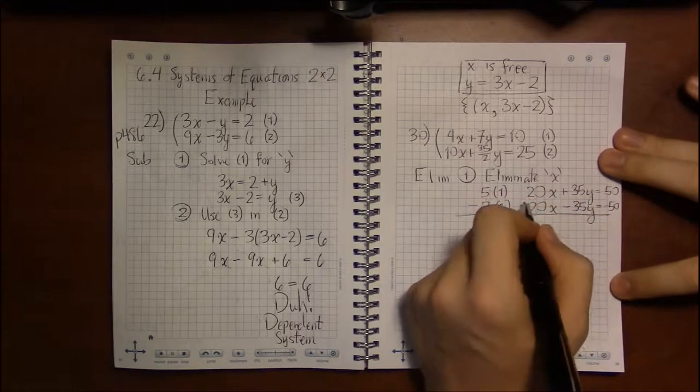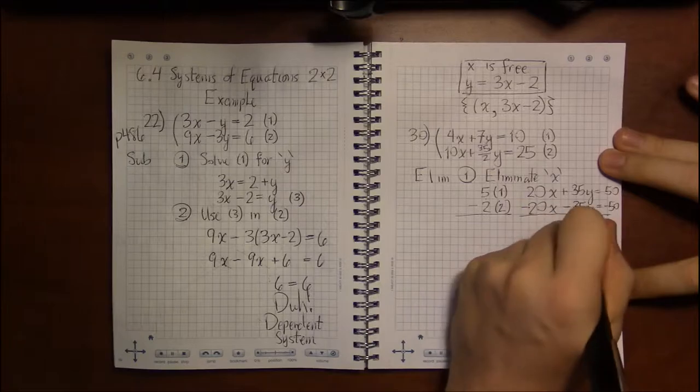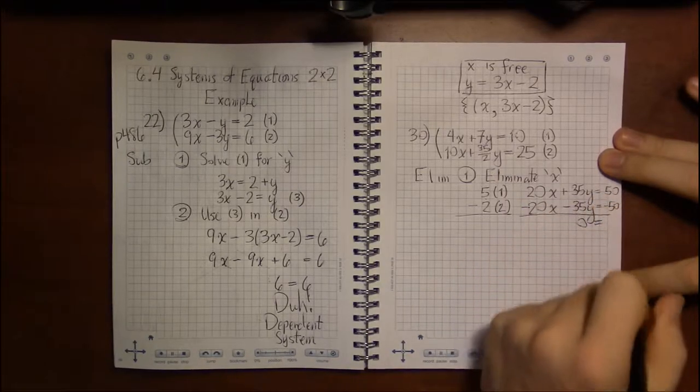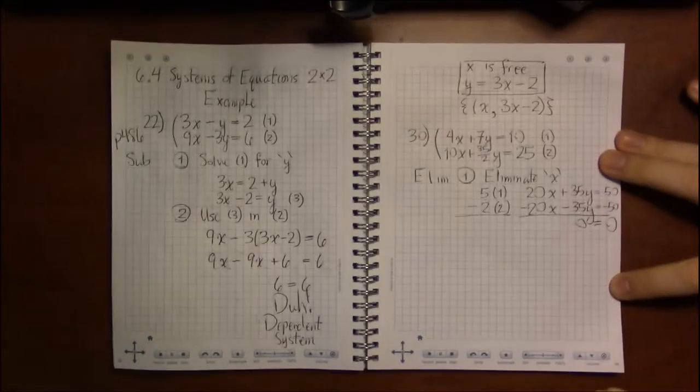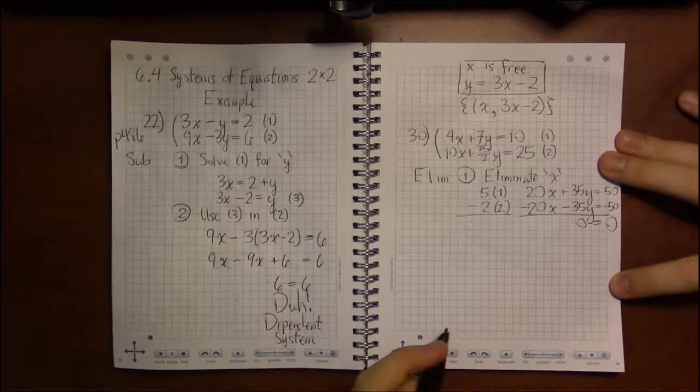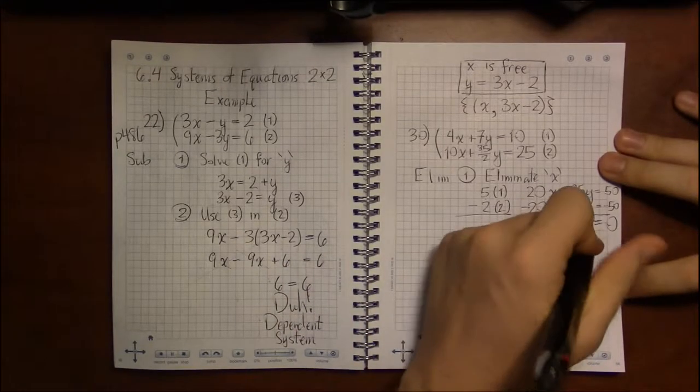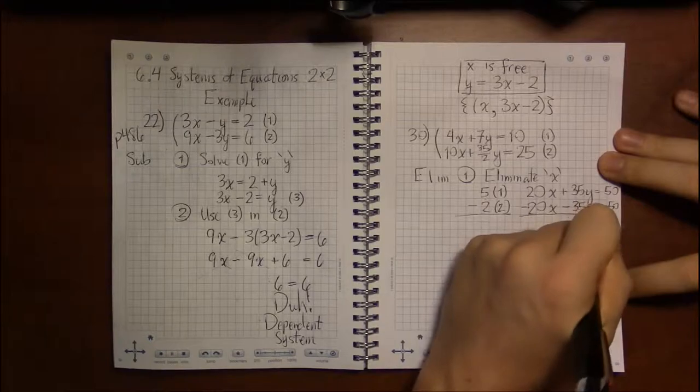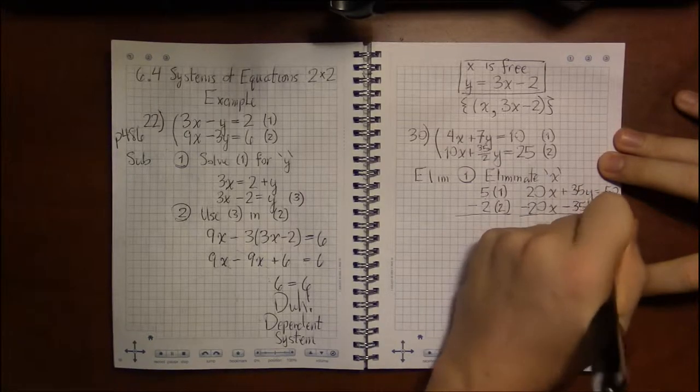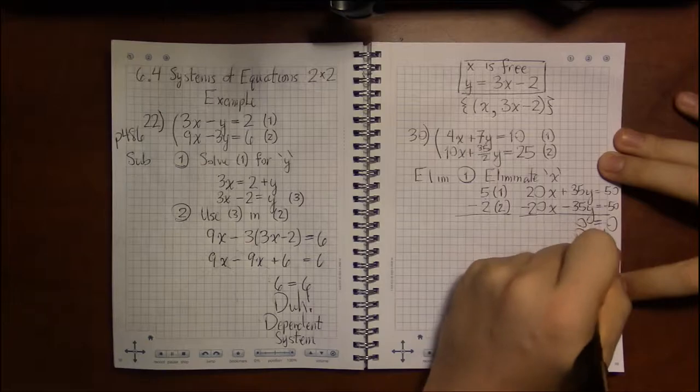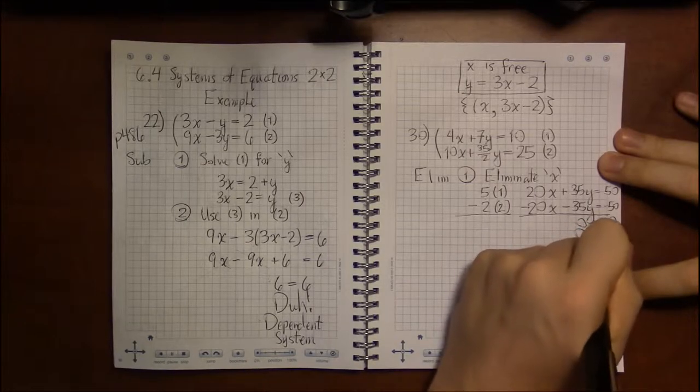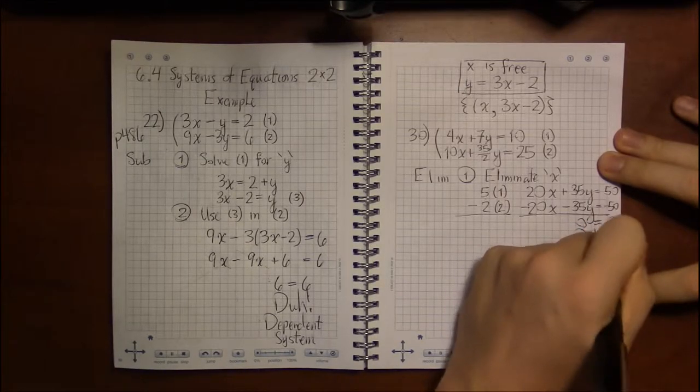And we end up with nothing. Big fat 0 on the left and 0 on the right. And again, any second grader can tell you 0 = 0. And if I can write an obviously true statement, it means a dependent system.